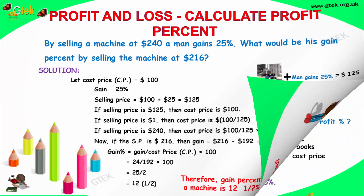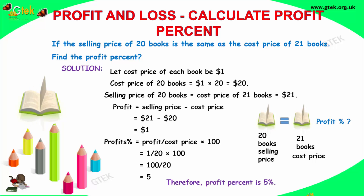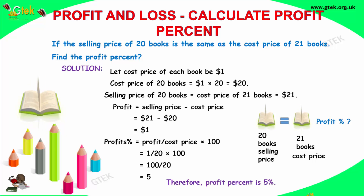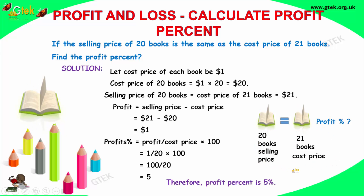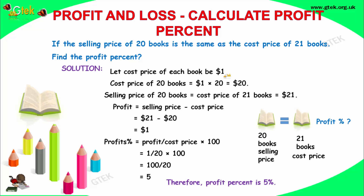Now we will move on to the next problem: Book Selling. If the selling price of 20 books is the same as the cost price of 21 books, find the profit percentage. You can see 20 books were sold for some amount, which is equivalent to the cost price of 21 books. If there is data which is blank, assign it as $1.